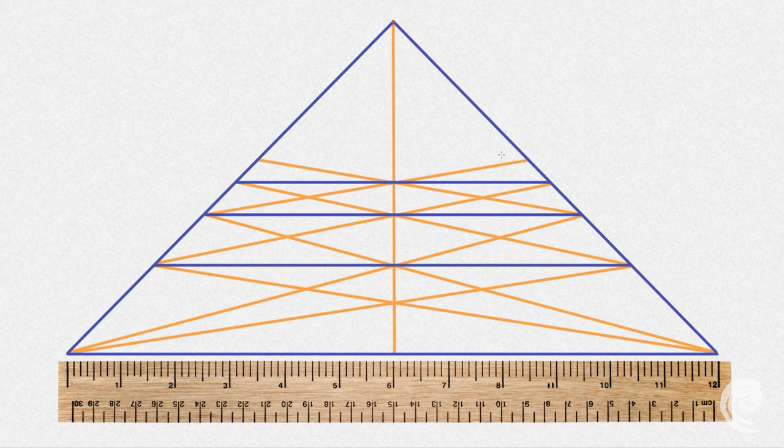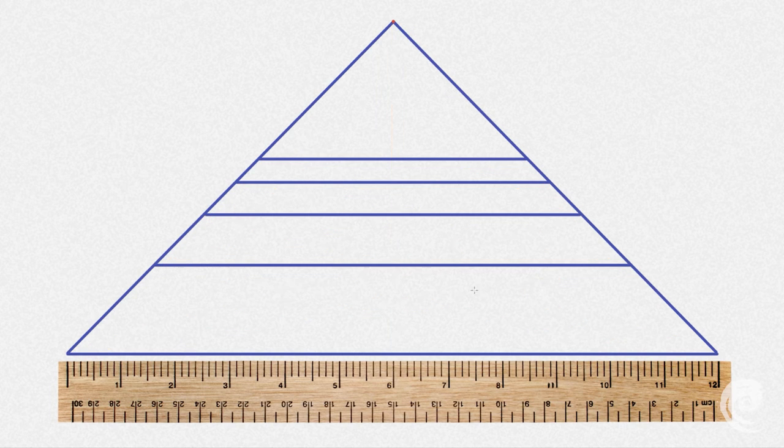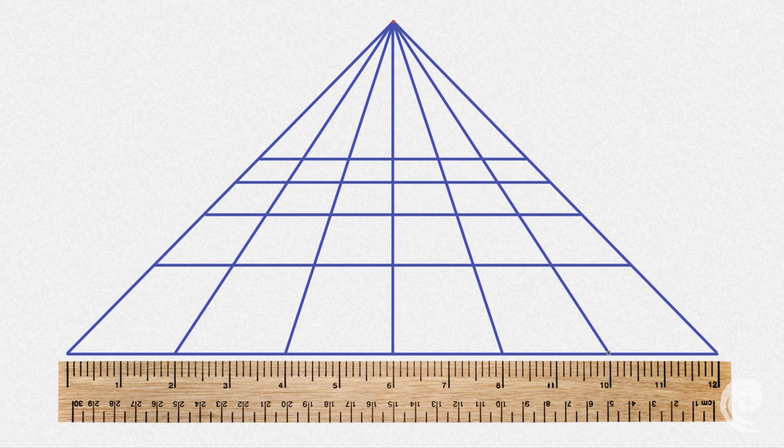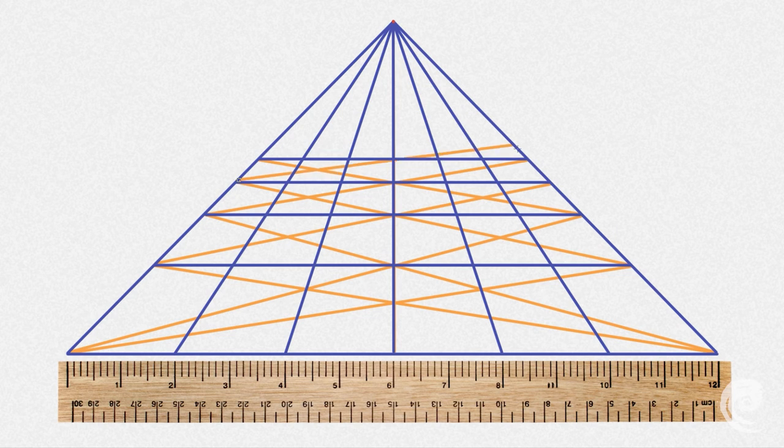I'm also going to add some vertical grid lines, so every 2 inches for me I'm going to connect the bottom to the vanishing point.